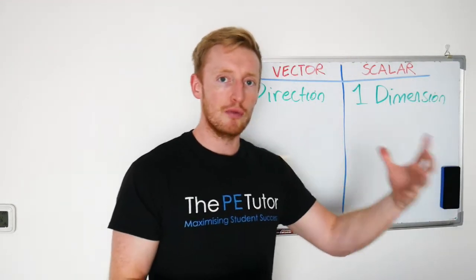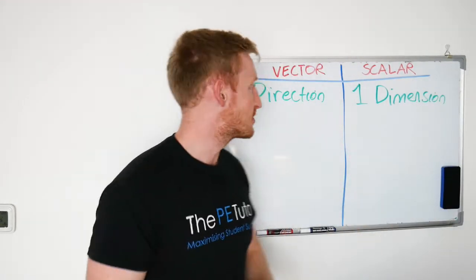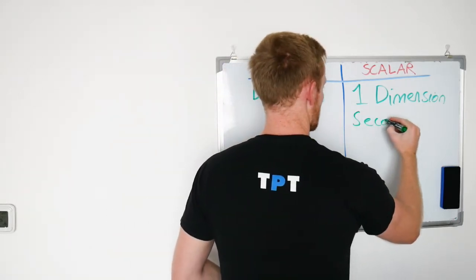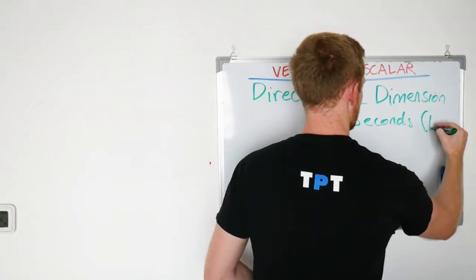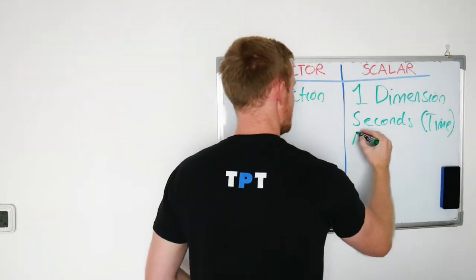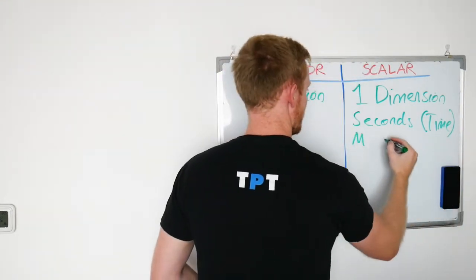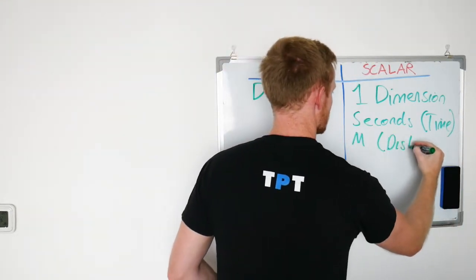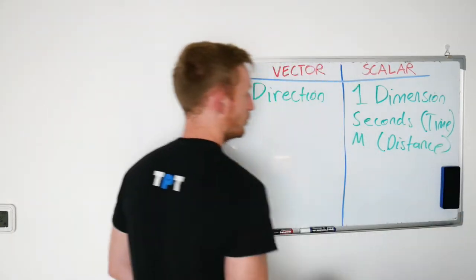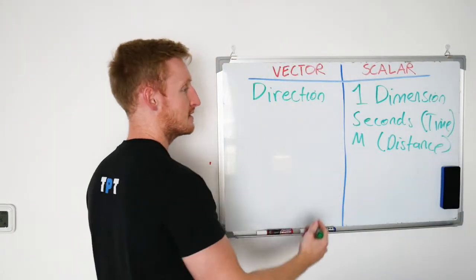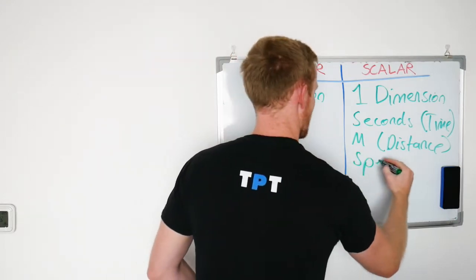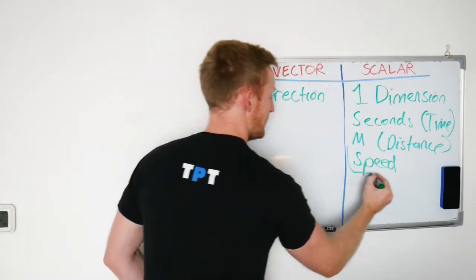So the numerical value attached to it — it could be seconds if we are talking about time, it could be metres if we are talking about distance. We could combine metres and seconds to generate a scalar quantity of speed.